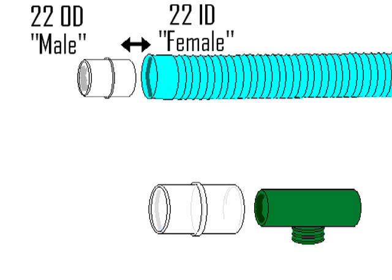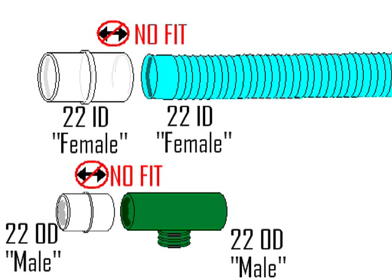Those are the things that fit: 22 OD male and 22 ID female, for obvious reasons. Two adapters of the same size will not fit together — such as 22 ID females not fitting together, nor do 22 OD males.